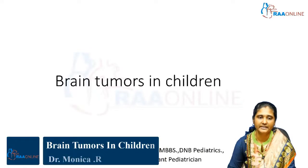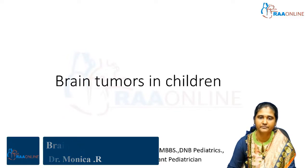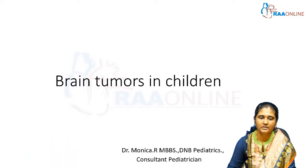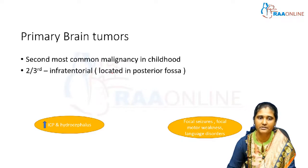Welcome, today we are going to discuss about brain tumours in children. Primary brain tumours are the second most common malignancy in childhood after leukemia, out of which two-thirds are infratentorial — meaning they are located in the posterior fossa.